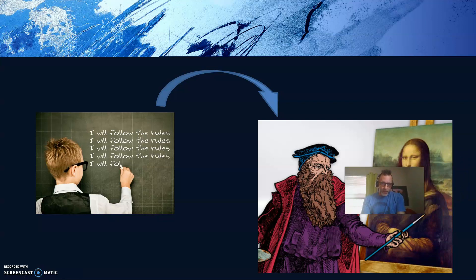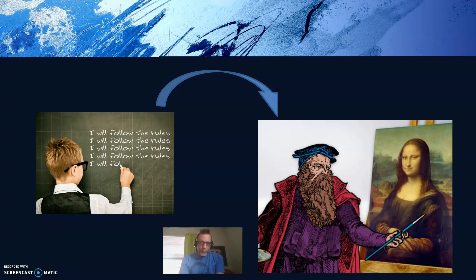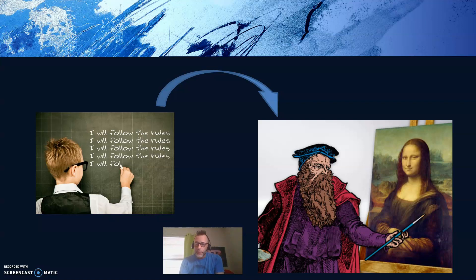Think of it this way. Leonardo da Vinci didn't just pick up a paintbrush and automatically paint the Mona Lisa. Leonardo da Vinci had to first learn about the rules of art, the elements of art. He then had to apply those rules to creating an art piece with meaning, and this is also where the principles come in afterwards. So first, da Vinci followed the rules, and then da Vinci was able to create the Mona Lisa.